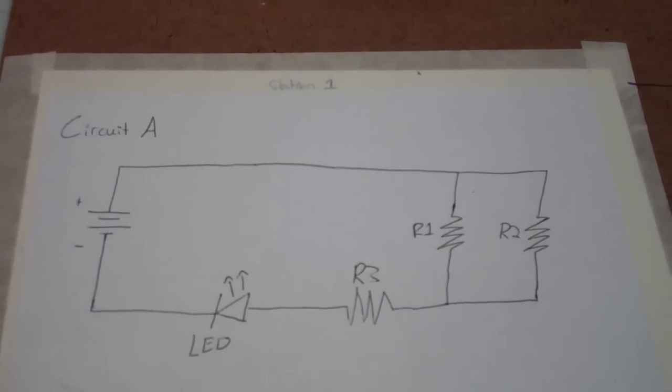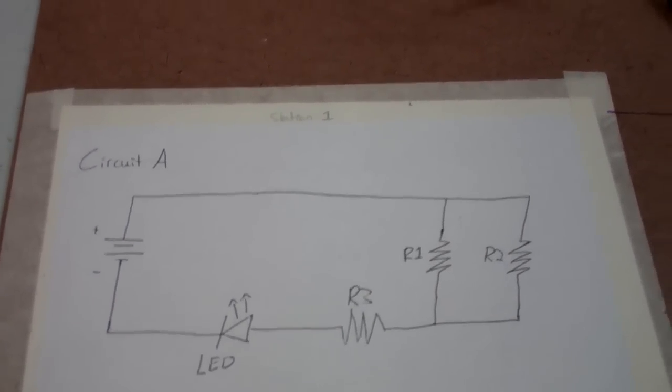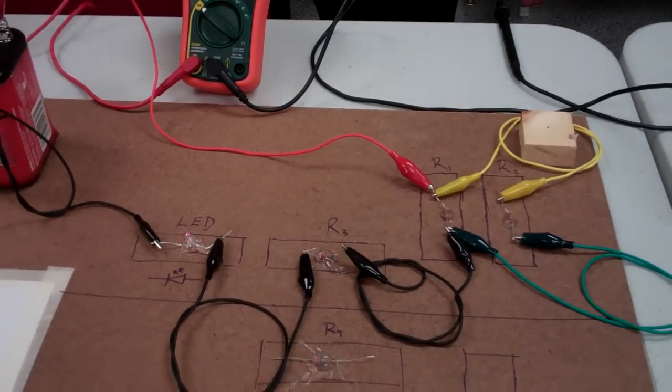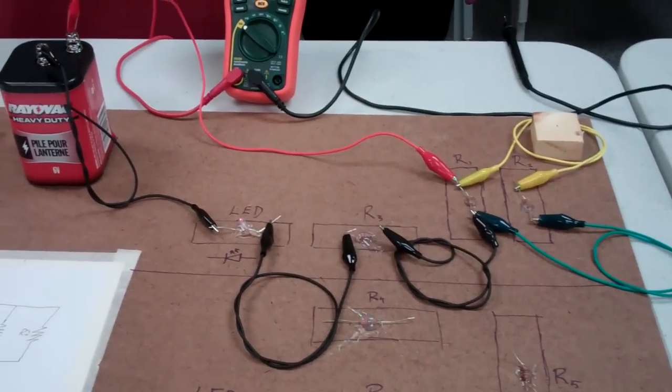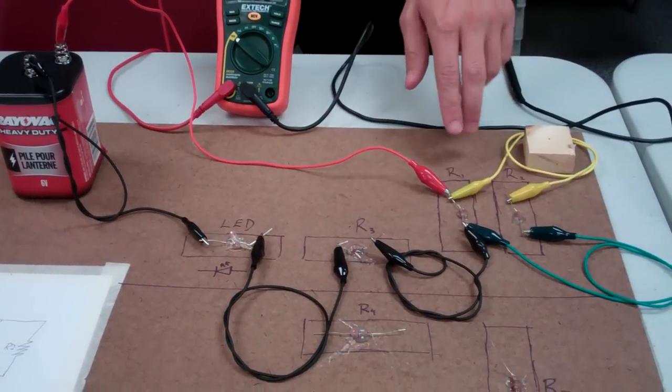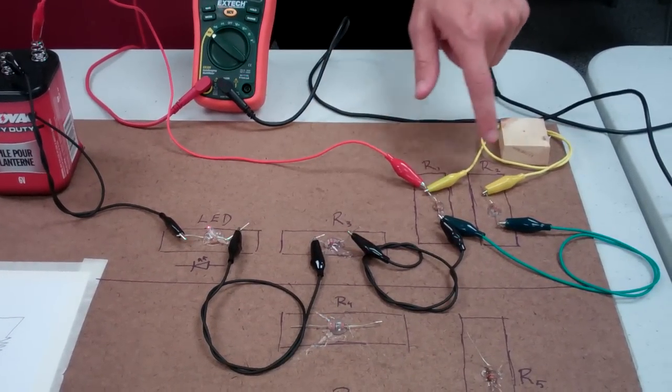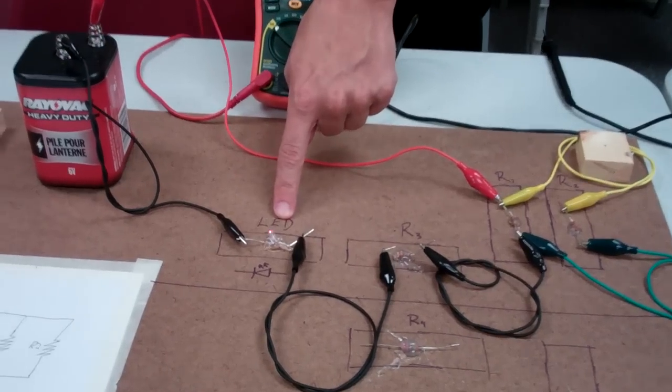Okay, so let's measure the current going through R1. Okay. So this is the actual circuit here? Correct, this is the actual circuit. You'll notice that we have our three resistors right here and our LED, which is currently illuminated.